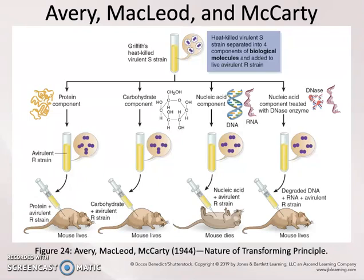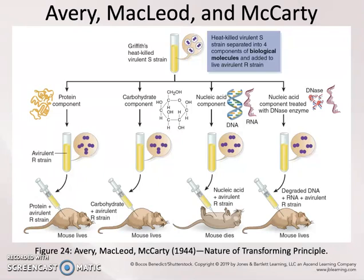Following those studies, he took enzymes — DNase and RNase — and used them to selectively destroy either DNA or RNA. When he used DNase to destroy DNA molecules and retained RNA, the RNA plus the living R strain did nothing, and the mouse still remained alive. But RNase mixed with the nucleic acid component would destroy all of the RNA, keeping all of the DNA intact, and that again was able to generate the disease symptoms and a dead mouse, indicating that the molecule responsible for transforming the R strain into the S strain was DNA.